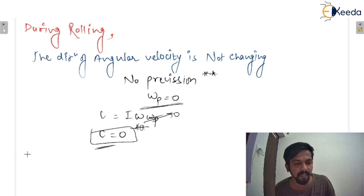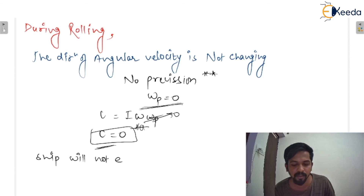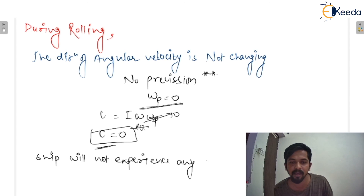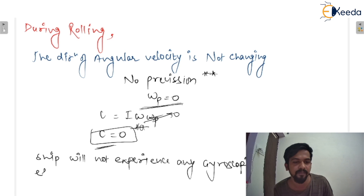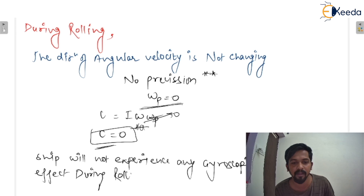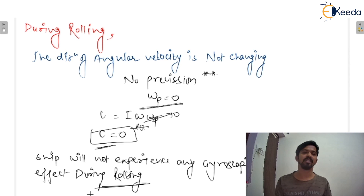So, since C equals 0, ship will not experience any gyroscopic effect during rolling — during rolling, there is no effect. I hope you understand this topic of rolling and pitching. Thank you.